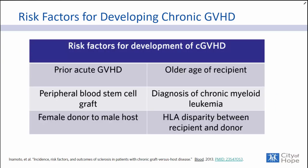Risk factors for developing chronic GVHD include: a history of prior acute Graft-vs-Host Disease; receiving a peripheral blood stem cell graft; male patients who received stem cells from a female donor; older age at time of stem cell transplant; and high HLA disparity between the recipient and donor, meaning the match level between host and recipient wasn't very high yet it was still important to proceed to transplant.